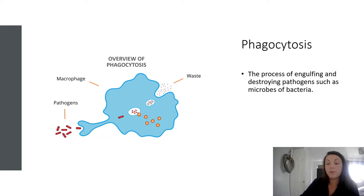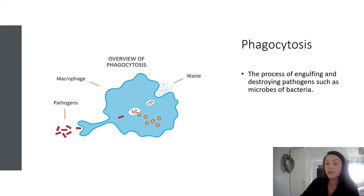When the phagosome fuses with a lysosome, a phagolysosome is created. This phagolysosome is filled with digestive enzymes which destroy the contents, ending the process of phagocytosis. The macrophages develop from monocytes when inflammation occurs and are of vital importance to the immune system. Macrophages are a variation of cytokine cell which protect the body from microbial infection by blocking or destroying pathogens.